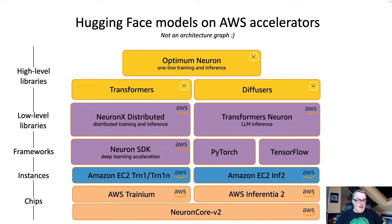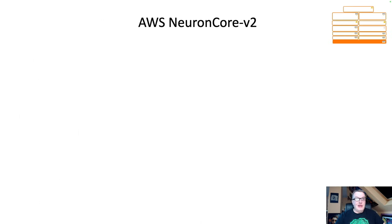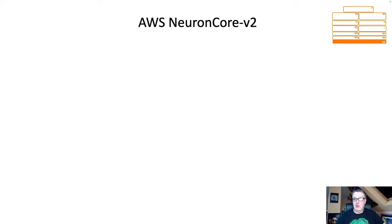We're going to cover every block here — except PyTorch and TensorFlow. We'll go bottom-up and start with the Neuron Core V2. If I say 'core' at any point, I mean Neuron Core, not CPU cores. CPU cores are completely unrelated. So I'll try to say Neuron Core, but if I say core, you'll know it's the same thing.